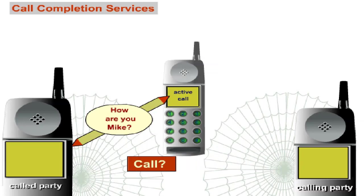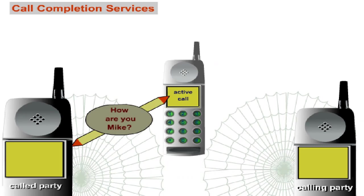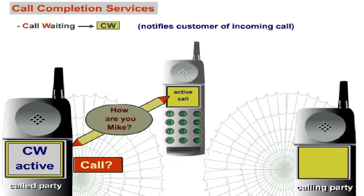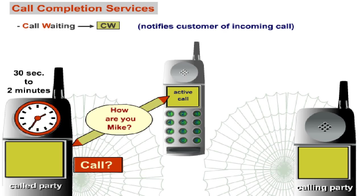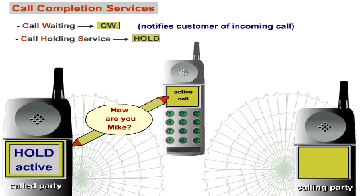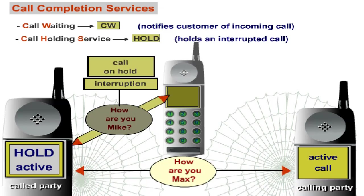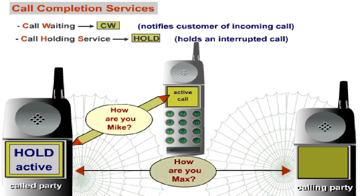Call completion services allow the customer to postpone incoming calls which he is currently not able to accept, as well as to hold calls while simultaneously making another call. Call waiting, CW, notifies the customer of an incoming call when no traffic channel is available and the customer is engaged in an active or held call. The customer has from half a minute to two minutes to decide whether to accept, reject, or ignore the postponed call. The call holding service, HOLD, permits the customer to interrupt communication on the active call for another call, without losing the connection to the first call, as the traffic channel remains assigned to the customer so he can resume communication.